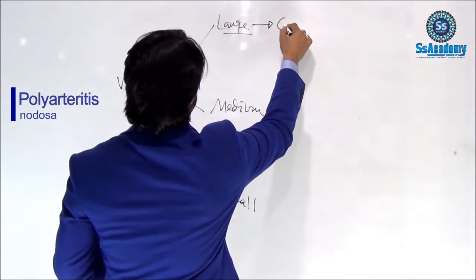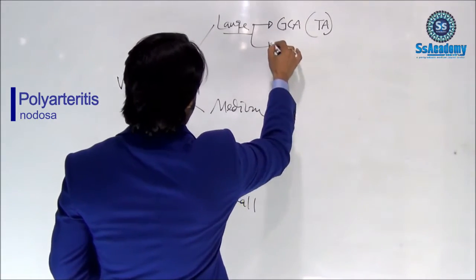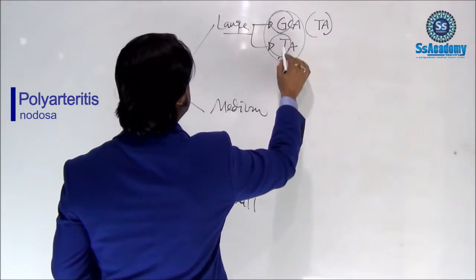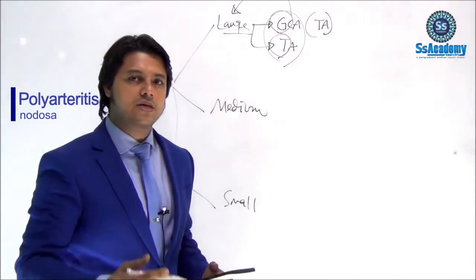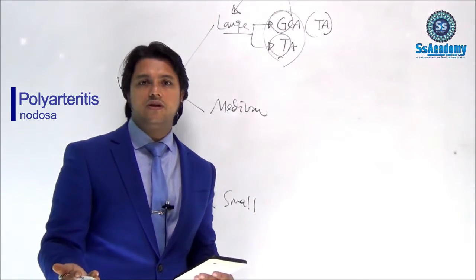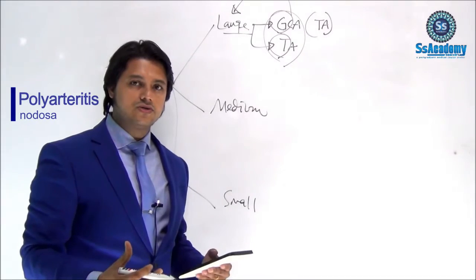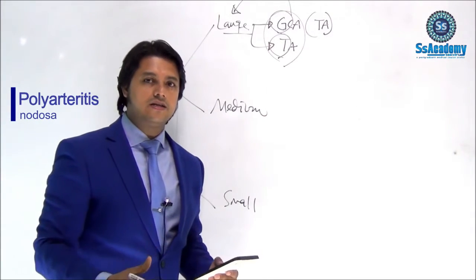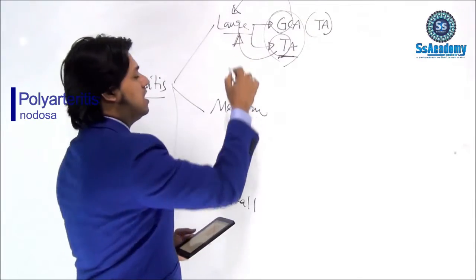Large vessel vasculitis includes giant cell arteritis — another name is temporal arteritis — and Takayasu's arteritis. To remember, giant means large, so giant cell arteritis is the large vessel vasculitis. Taka is a currency name in Bangladesh, so you can associate Takayasu's arteritis with large as well. Both giant cell arteritis and Takayasu's arteritis are large vessel vasculitis.